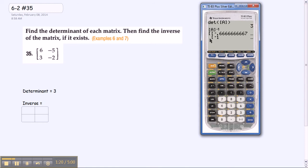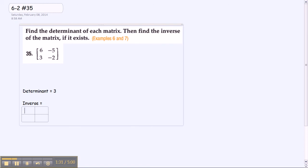But because these are in huge decimals, you can click math, fraction, and then enter, and it'll put it in fractions. So your inverse is negative two-thirds, five-thirds, negative one, and two.